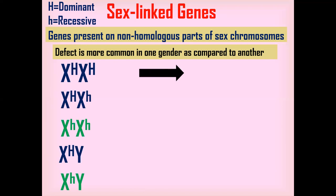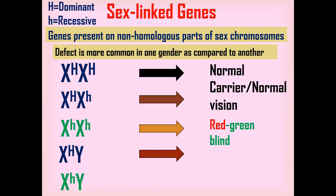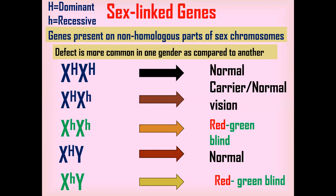For phenotypic results: a homozygous dominant female has normal color vision; a heterozygous female, although carrying the defective allele, has normal color vision and is a carrier; and a homozygous recessive female suffers from red-green blindness. A male with the normal allele H has normal color vision, while a male with only the lowercase h defective allele will be red-green blind. There is no carrier condition in males because this allele is not present on the Y chromosome — that is why it is more common in males.